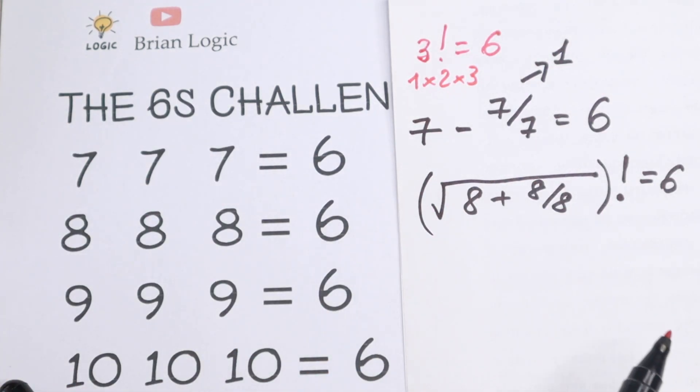I'll write this right here: 3 factorial equals 6, because this is 1 times 2 times 3. I hope you understand this step.